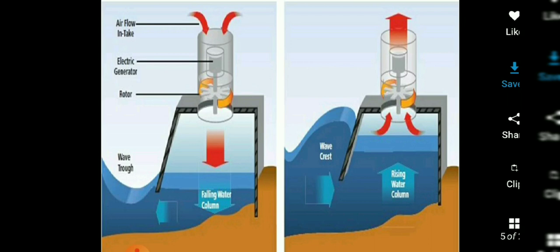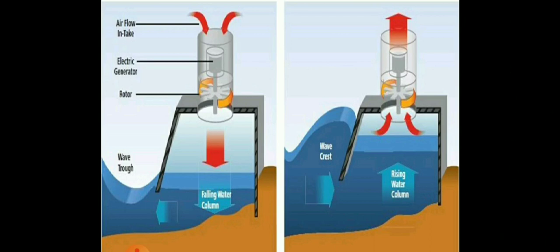The electric generator operates and electricity is produced. In the second figure showing the wave trough, the air is released, the volume increases, and the pressure decreases. There is a pressure difference, and the air flow causes the rotor to rotate again in the same direction.